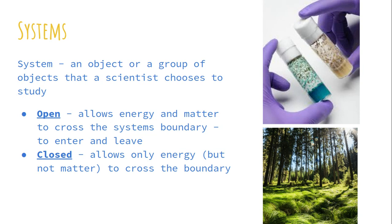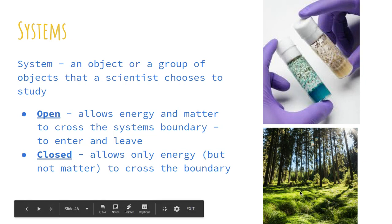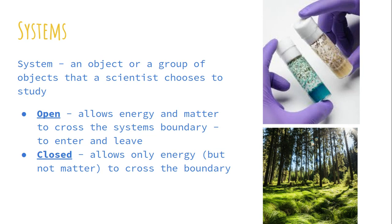In the closed system, organisms will eat, reproduce, and die right there. In contrast, in the open ecosystem, they will also eat, reproduce, and die, but they can move to and from and all over that ecosystem.